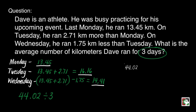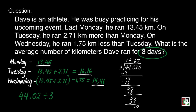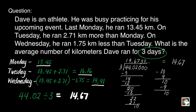We have to get the average, so we divide by three since we have three days — Monday, Tuesday, and Wednesday. We will expect our answer to be a non-terminating decimal, meaning it does not end. We will settle for two decimal places and round off our answer to the nearest hundredths. That is 14 and 67 hundredths kilometers. Dave can run an average of 14 and 67 hundredths kilometers every day for three days.